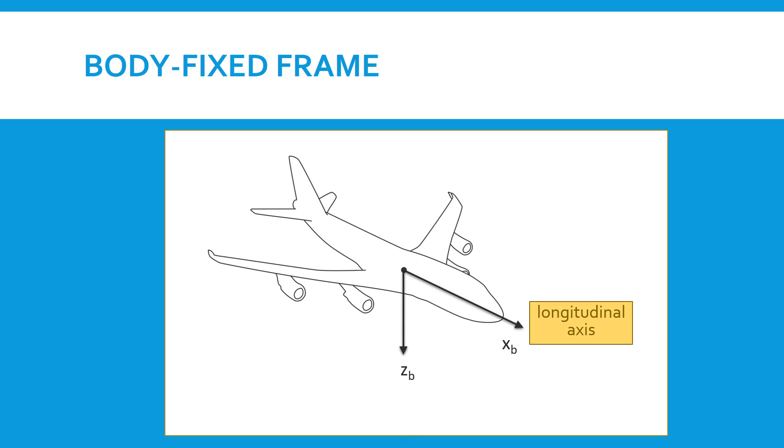Z points downward, or at least out of the bottom of the aircraft, and it is so oriented that it's in the plane of symmetry of the aircraft. So XB, ZB forms a plane of symmetry of the aircraft.